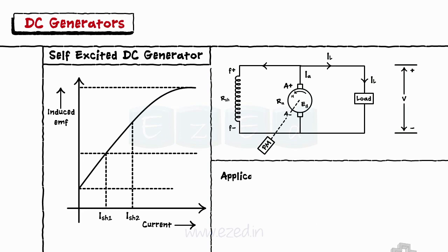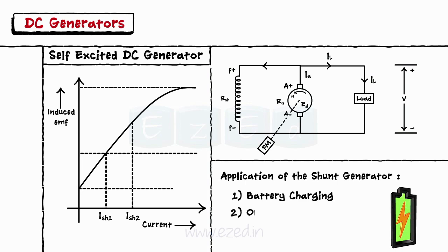The application of the shunt generator are battery charging, ordinary lighting, power supply purposes, etc.